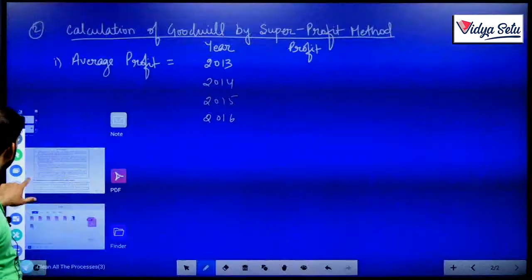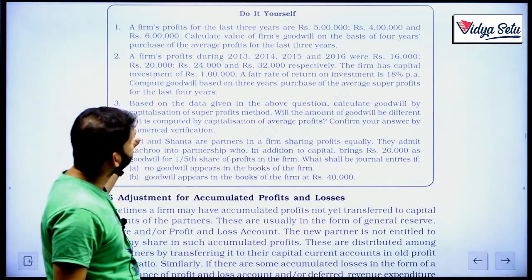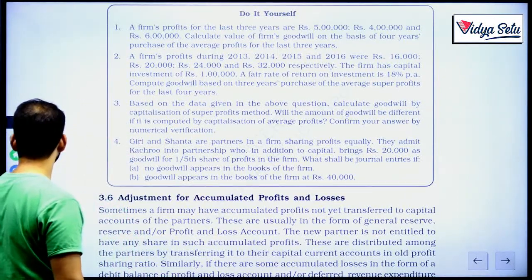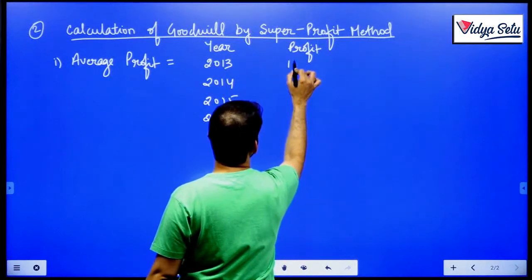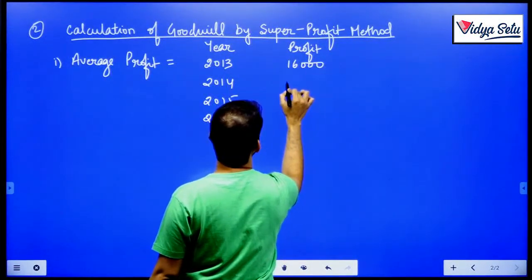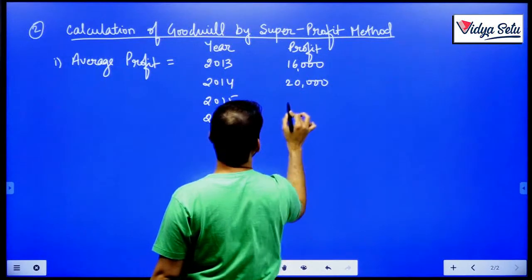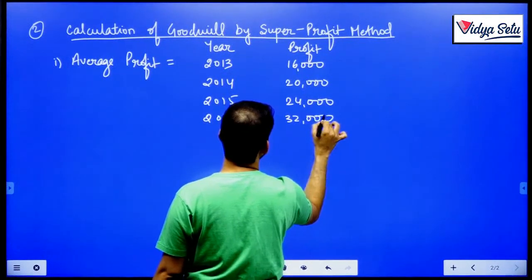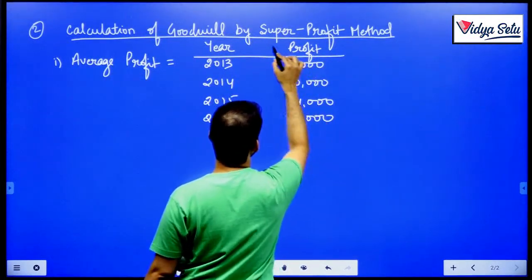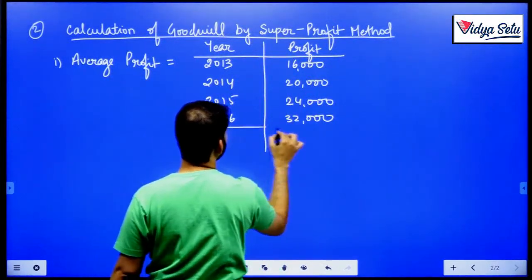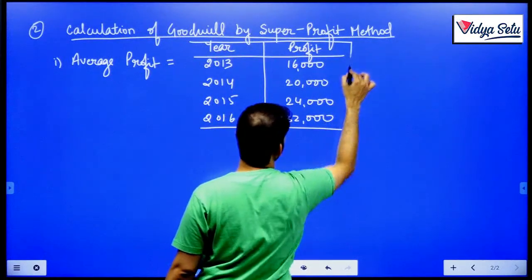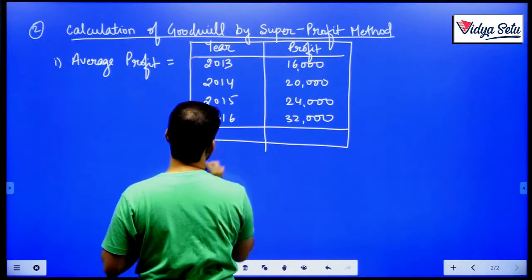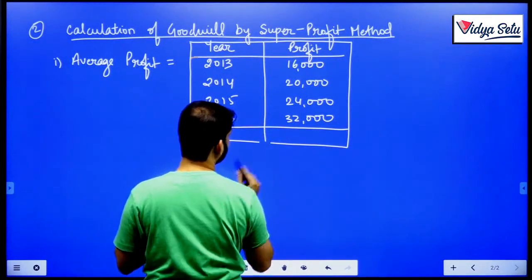Let us check the figures. The profits are 16, 20, 24, and 32 — that is 16,000, 20,000, 24,000, and 32,000.